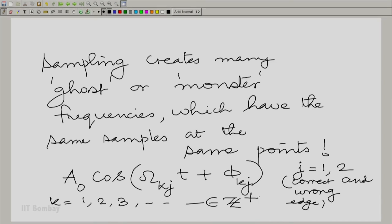And k is all the positive integers, essentially belongs to Z+ the positive integers. Now, what are these omega_kj's and what are the corresponding phases? We need to write that down.